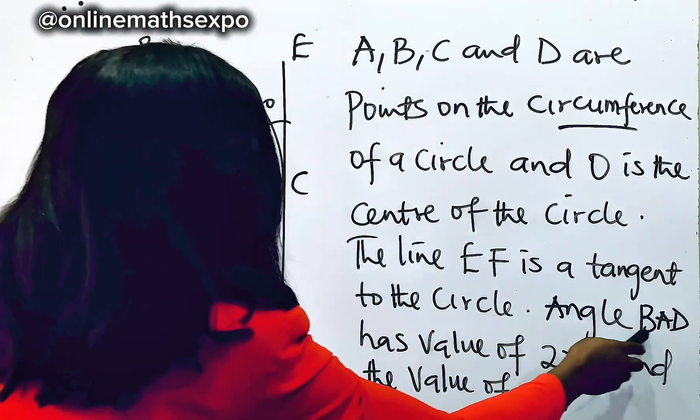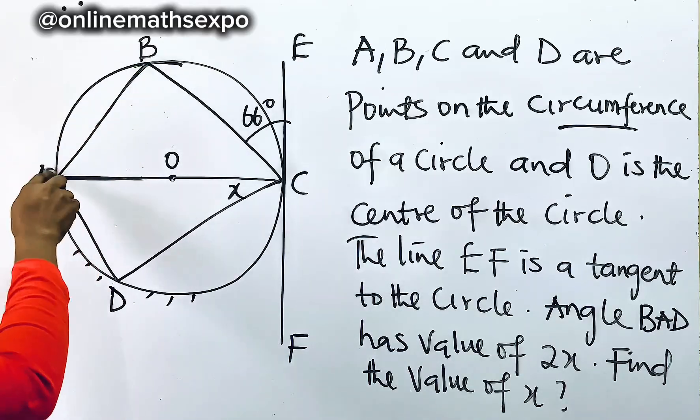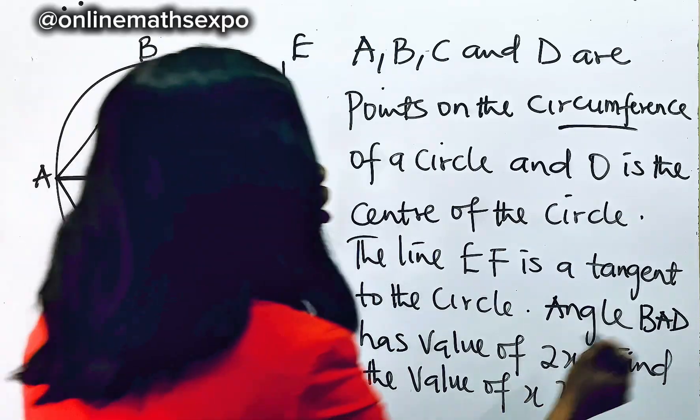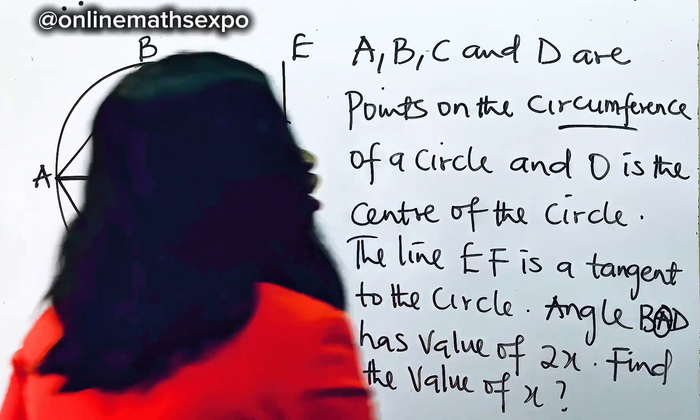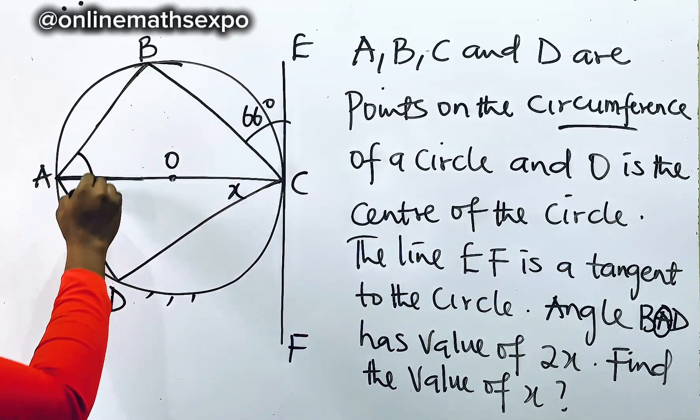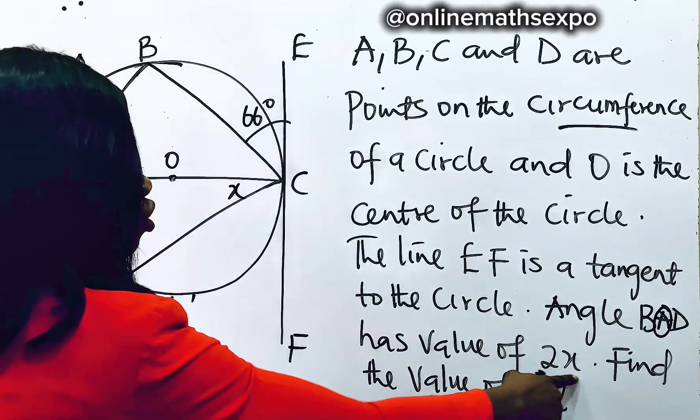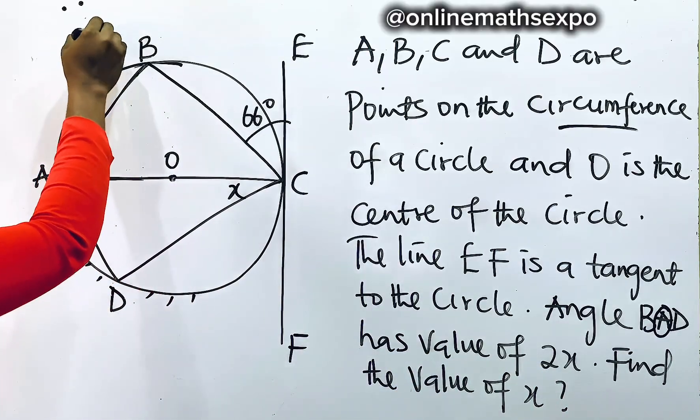So we are also told angle BAD. Go to the diagram B, A, D. Remember the angle is on this letter A. So angle BAD. That means the total angle here is given as what? It's given as 2X. So that's what the question says. The whole angle here is given as 2X.